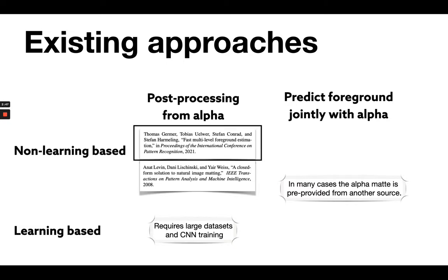What we choose to look at here is an interesting work from Germer et al on fast multi-level foreground estimation. This work sped up previous foreground estimation work from ANAT-11, which was very effective, but quite slow in its basic form.